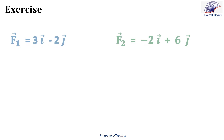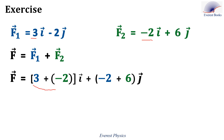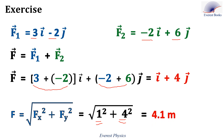Let's solve an exercise. Consider two vectors F1 and F2. F is the resultant of the two vectors. The X component of F1 is 3 and the X component of F2 is minus 2, so the X component of the resultant vector is 3 plus (minus 2). The Y component of F1 is minus 2 and the Y component of F2 is 6, so the Y component of the resultant vector is minus 2 plus 6. Then the resultant vector is 1i plus 4j. The magnitude of the resultant vector equals the square root of 1 squared plus 4 squared, which is equal to 4.1 meters.